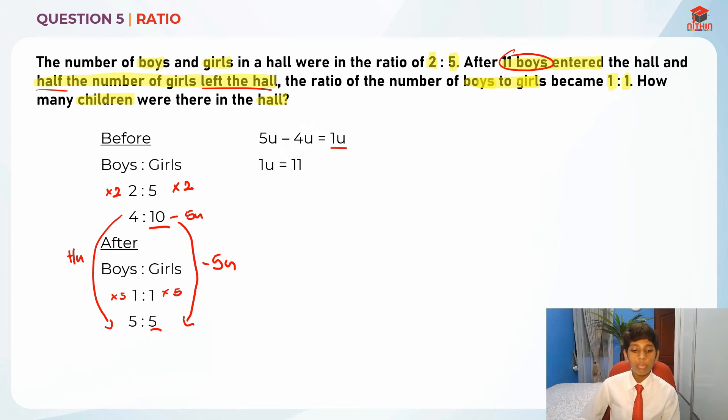So if we know 1 unit is equal to 11 boys, how many children were there in the hall? So there were actually 14 units. At first, there were actually 4 units plus 10 units, so there's 14 units. So how many children were there in the hall, meaning at the start?